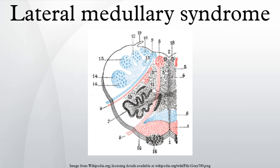The spinothalamic tract is damaged, resulting in loss of pain and temperature sensation on the opposite side of the body. Damage to the cerebellum or the inferior cerebellar peduncle can cause ataxia.